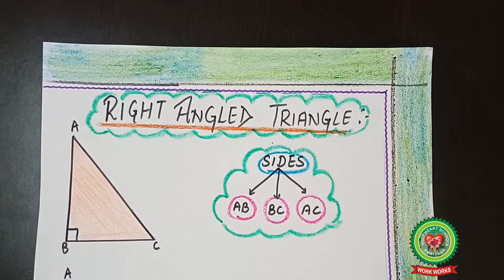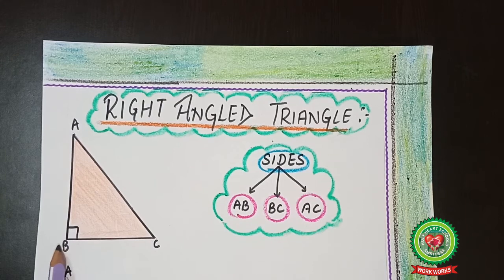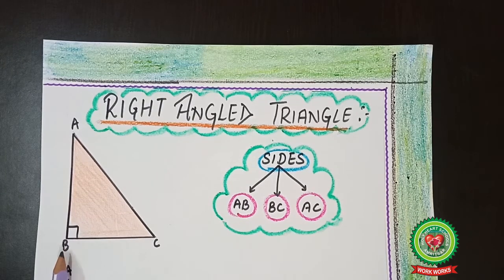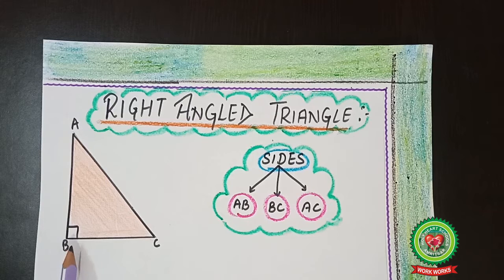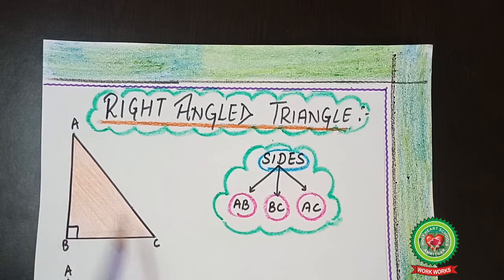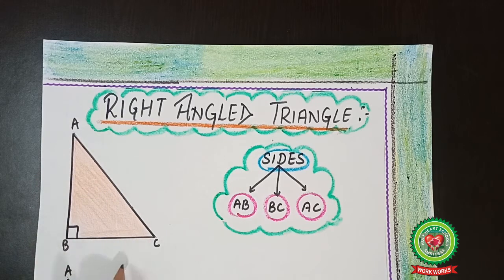As you know, students, right triangles always include one right angle which is usually marked as a square box, which helps you to identify it. And here you can see that these are the three sides: AB, BC, and AC. These are the three sides of the right-angle triangle.